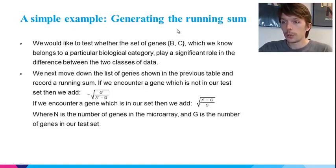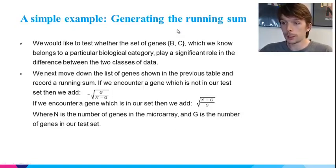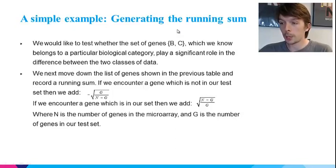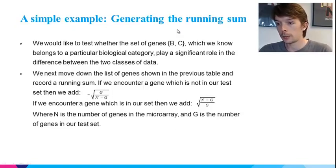We would like our walk to be like the Brownian bridge, as used in the Kolmogorov-Smirnov test. But as there will typically be many more genes not in our set than there are in our set, the number of steps to the left and right will not be equal, and our Brownian bridge will not be complete. So we rescale the relative sizes of the left and right steps. One simple way is to take the left step of size shown in the first term in the slide, where G is the number of genes in the test set and N is the number of genes on the microarray chip, and take the right step of the size shown in the term below, ensuring we return to zero over the course of the walk. Note that the GSEA method has evolved and there are now more sophisticated ways of doing this which take gene correlations into account, but this is good enough to illustrate the basic principles.